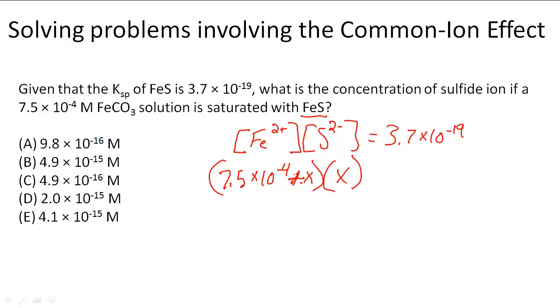X is the change that happens for S2- because there was not S2- before. There's Fe, which is a common one between this. This is already dissociated in solution, but there's not S. So what happens is the sulfide ion is going to form, and that change is going to be represented in X.